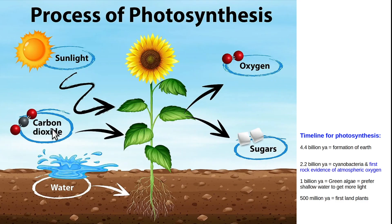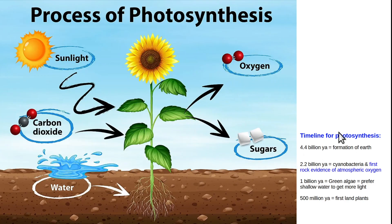A sugar is basically carbons, hydrogens, and oxygens. Plants make glucose through photosynthesis and then give off oxygen — the two red circles represent oxygen. We discussed the timeline: photosynthesis didn't happen at first, and then gradually oxygen became more available in the atmosphere.